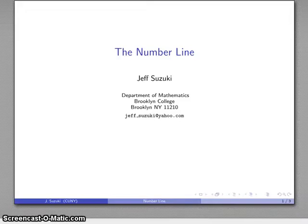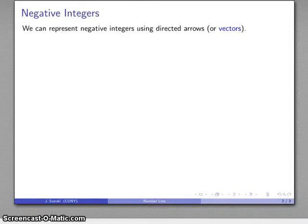Let's continue our discussion of the number line by considering how we would represent negative integers. We can represent these negative integers using directed arrows, which somewhat later in your education you'll learn about as vectors.